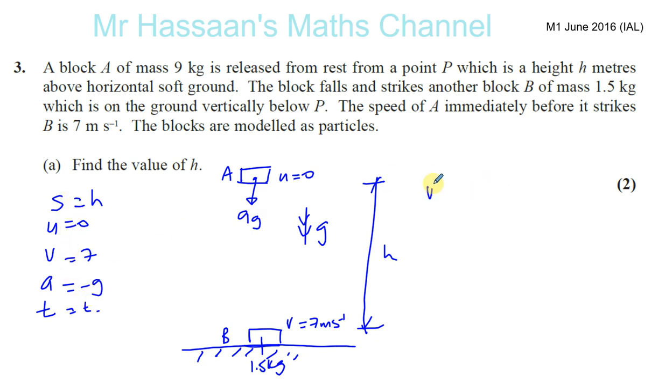If we use V squared equals U squared plus 2AS, we need to find what H is which is our S here. So V is 7, 7 squared which is 49 equals U squared which is 0. Now I'm going to take down as positive because it's moving down. So plus 2 times G, which is 9.8 times H.